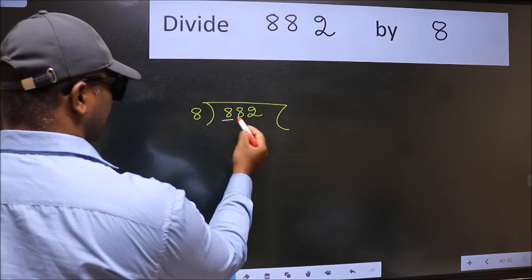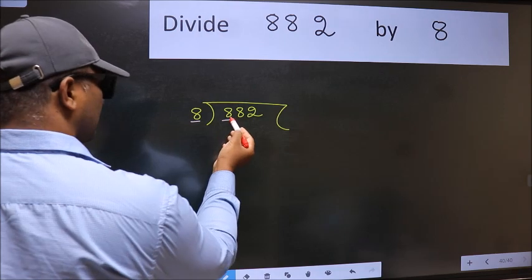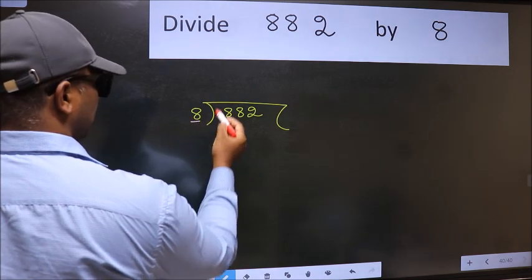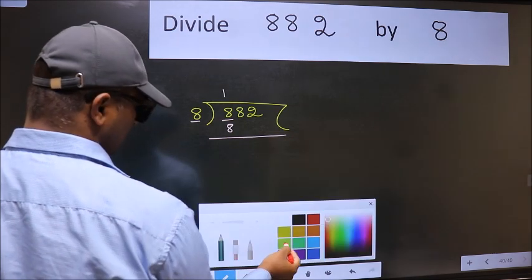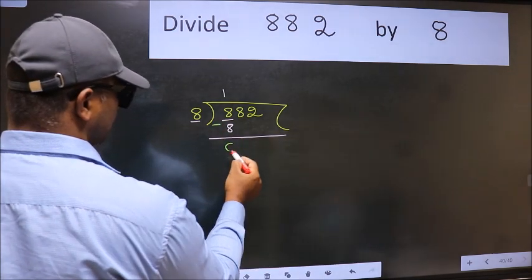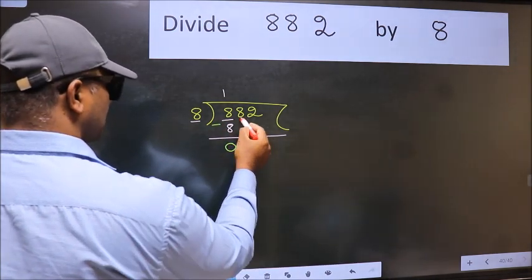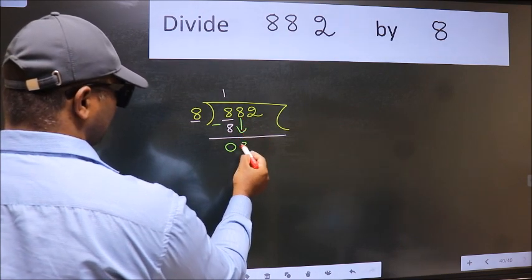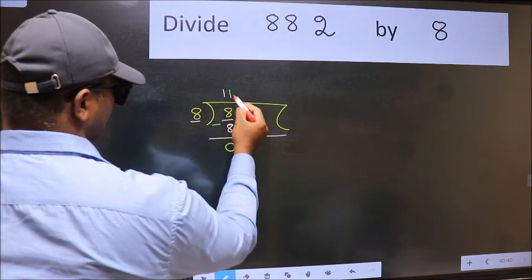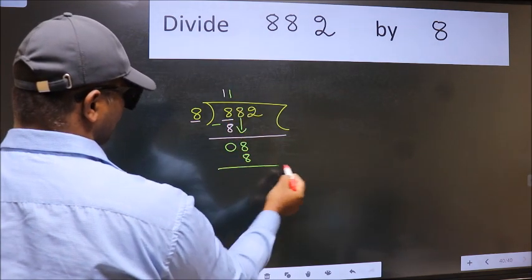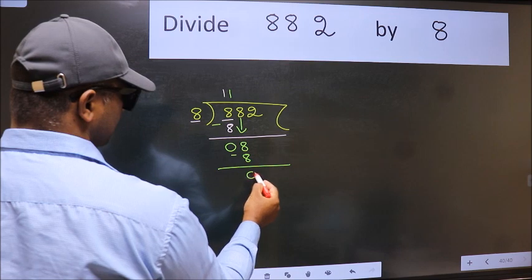Here we have 8 and here 8. When do we get 8 in 8 table? 8 once 8. Now we should subtract. We get 0. After this, bring down the beside number. So, 8 down. When do we get 8 in 8 table? 8 once 8. Now we subtract. We get 0.